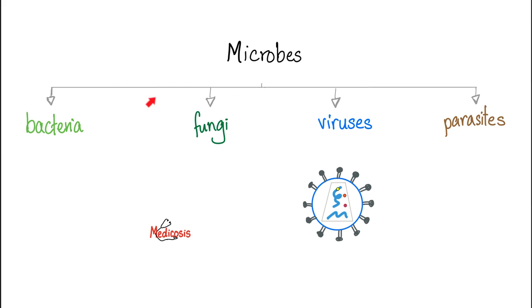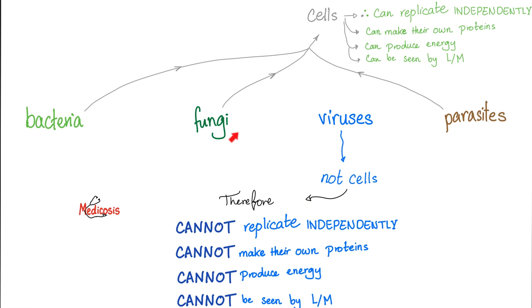Microbes are divided into bacteria, fungi, viruses, and parasites — but technically parasites are not microbes because the word 'micro' means microscopic. Some parasites are so big, like Ascaris and Schistosoma. Bacteria, fungi, and parasites can replicate independently. They can make their own proteins, produce energy, and they can be seen by light microscopy.